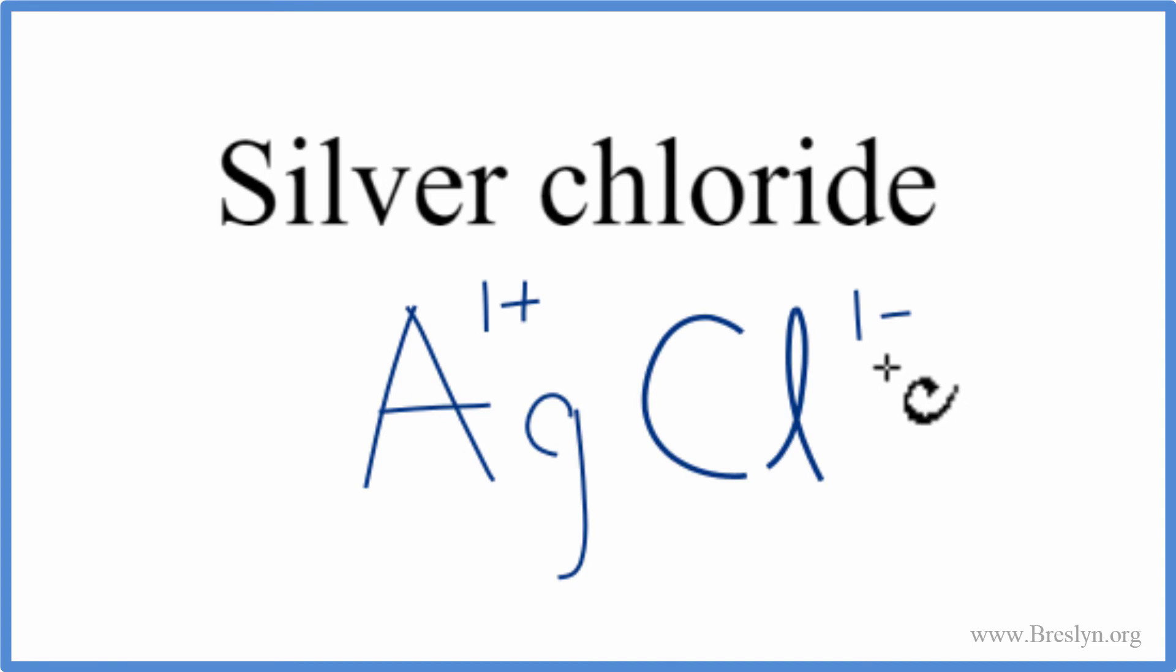1+, 1-, that adds up to 0, so we're done. This is the formula for silver chloride. Let's take the charges out to clean it up a little bit, and that's it, the formula for silver chloride, AgCl.